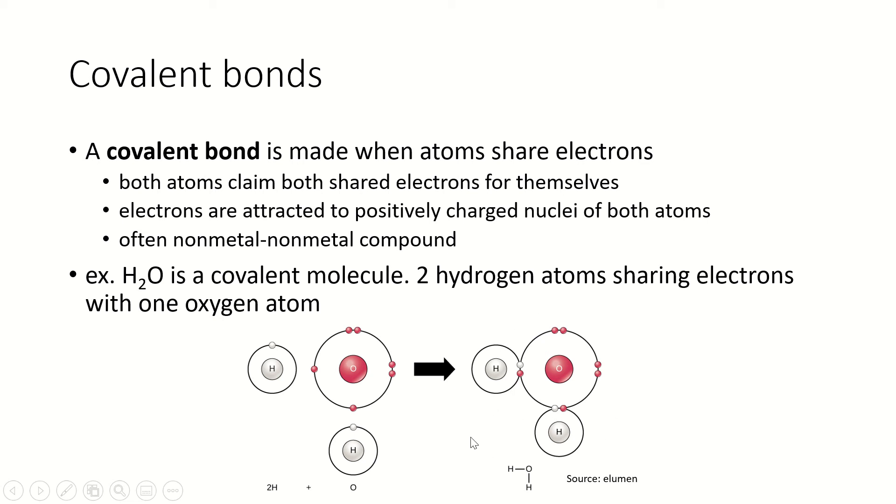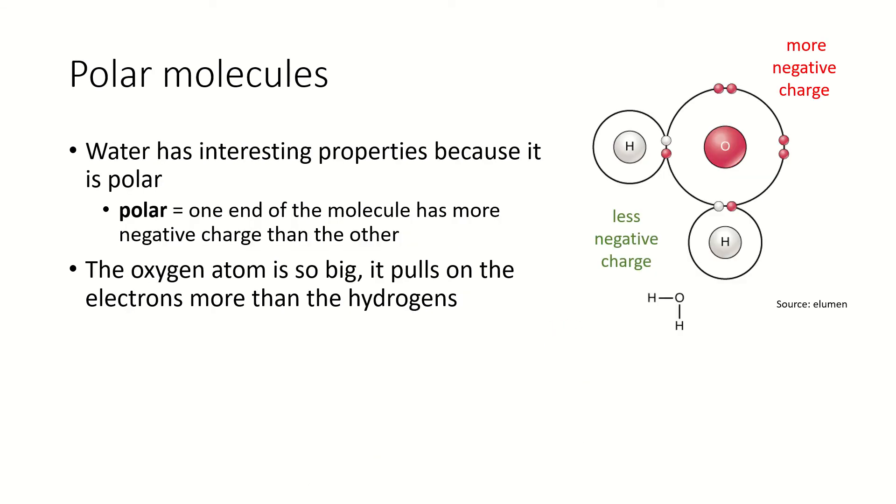Now notice when we draw them like this, we're drawing in the electrons. As you can imagine, that gets pretty old and tedious pretty quickly. So when we draw molecules, we usually just use a line to show a pair of electrons. And then the electrons that aren't involved in bonding, we don't show them.